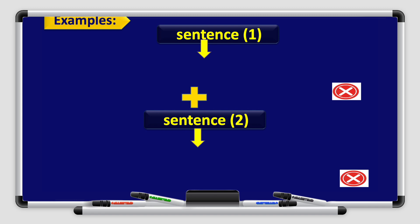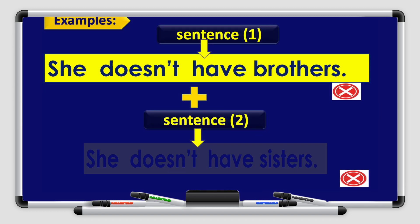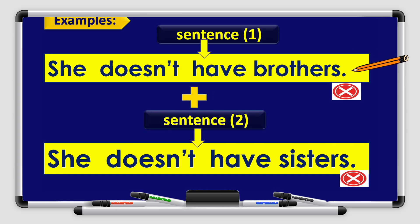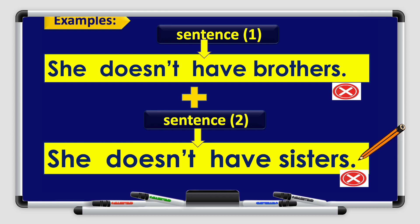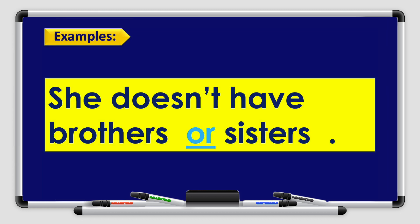Another example. Sentence 1 in negative: She doesn't have brothers. Sentence 2 in negative: She doesn't have sisters. It means she doesn't have neither brothers nor sisters. Using the conjunction 'or': She doesn't have brothers or sisters. It means that she doesn't have brothers and she doesn't have sisters. So to make our sentence short and neat, we use the conjunction 'or'.